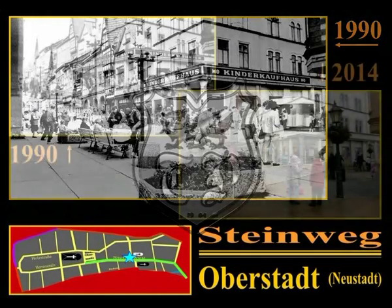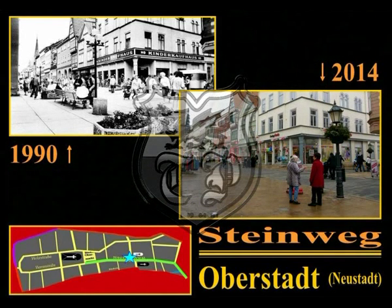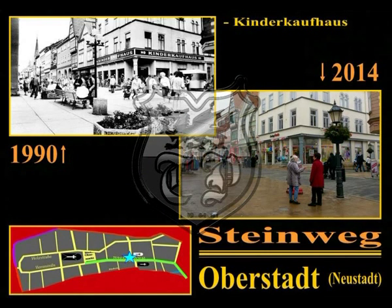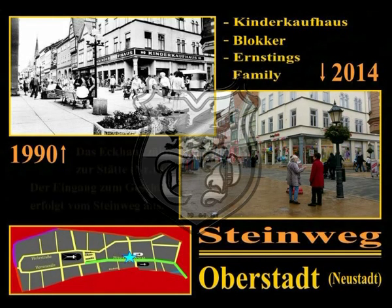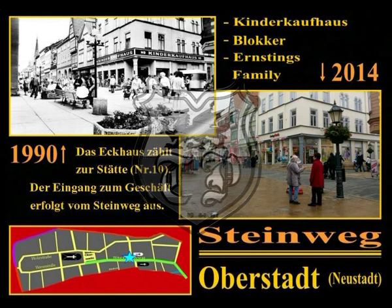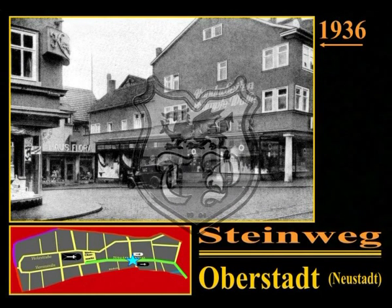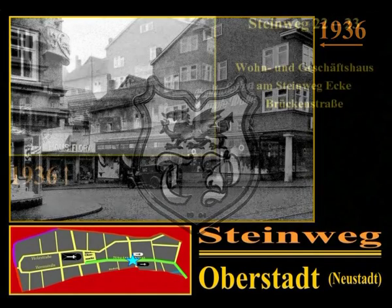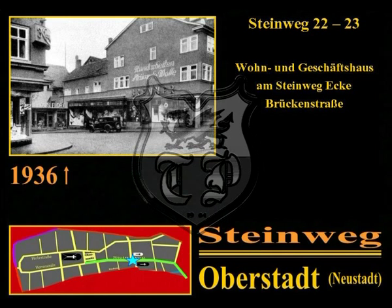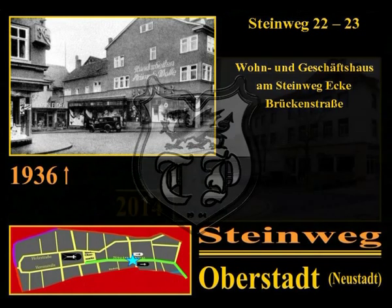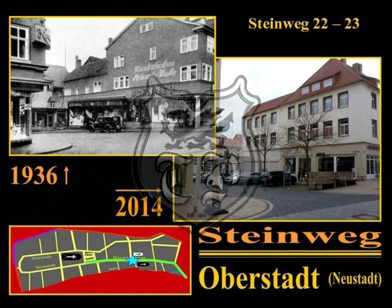Das ehemalige HO-Kinderkaufhaus trägt an der Stätte die Nummer 10; früher erfolgte der Zugang zu den Geschäftsräumen direkt über die Ecke, heute vom Steinweg her. Nach der Wende wurde das Kinderkaufhaus geschlossen; einige Jahre war das Gebäude an die Blocker Holding aus Holland vermietet, später saniert, befindet sich heute darin der Familienausstatter Ernsting's Family. Ein Foto aus dem Jahre 1936 zeigt das Handarbeitsgeschäft Brenner am Steinweg Ecke Brückenstraße sowie das Haus Flora an der oberen Brückenstraße. Während der DDR-Zeit befand sich im Eckhaus am Steinweg 23 ein Bekleidungsgeschäft; heute findet man hier ein beliebtes Eiskaffee.